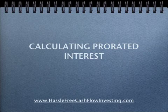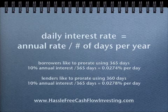If we are trying to calculate prorated interest — meaning we're taking only a fraction of a year or a number of days — we need to convert the annual rate into a daily rate. To solve for the daily interest rate, take the annual rate and divide by the number of days in the year. Borrowers like to prorate using 365 days and lenders like to prorate using 360 days. The difference is because the borrower wants a lower rate and the lender wants a higher daily rate, so they each have a conflict of interest in how they calculate the rate.